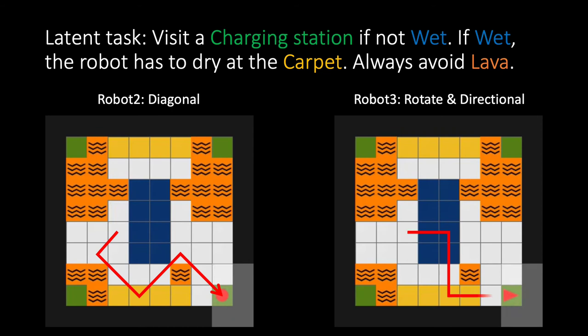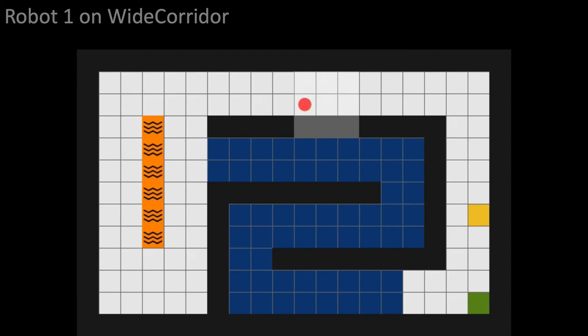Similarly, for the rotate and directional robot, it can come up with a plan that satisfies the task. We now transfer to other environments. Even if the environment gets bigger than the training environment, it can successfully reach the charging station. This is true even if the robot dynamics changes.